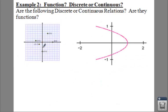So for example 2, let's say if we have a function and it's discrete or continuous, notice here for the first part you have some points, which in this case means you're going to have a discrete function.